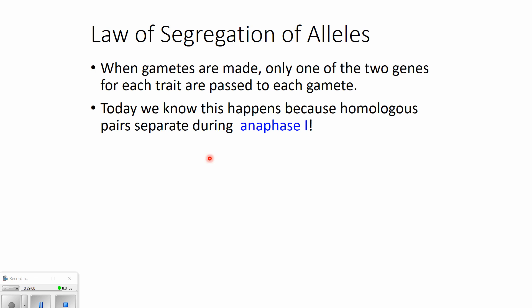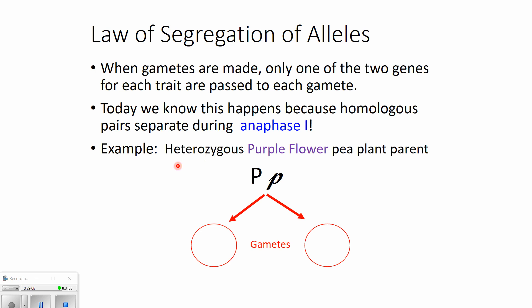Today we know this law is true because homologous pairs of chromosomes separate — remember the "prom night breakup" — it's anaphase one. Here's an example: a heterozygous purple-flowered pea plant has one allele for purple and one for white. Either one can be passed down to a sperm or egg, but any individual sperm or egg can only get one or the other. Because of chromosome separation in anaphase one, big P and little p cannot go to the same sperm — at least they're not supposed to, unless non-disjunction occurs. This is the law of segregation of alleles.